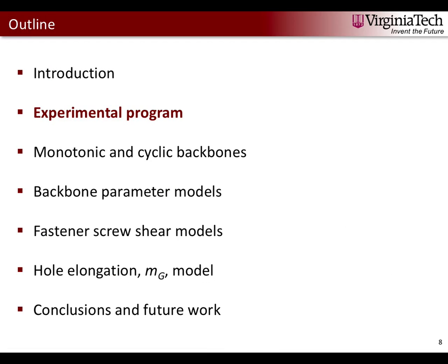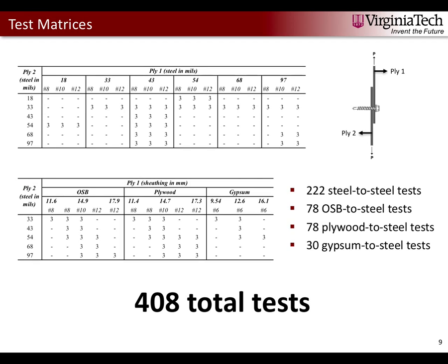Now I'll talk about our experimental program. These are our test matrices — the first is the steel-to-steel test and the second is our sheathing-to-steel test. Ply 1 is the ply in contact with the fastener head. For our steel-to-steel tests we varied six different ply thicknesses and three different fasteners, subjecting each combination to three trials of both monotonic and cyclic loading, resulting in 222 tests.